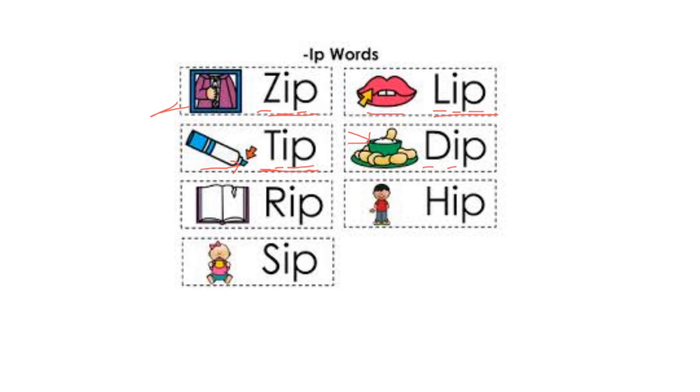And this: D-I-P, dip. What's happening to the paper here? R-I-P, rip. And what part of the body is this? H-I-P, hip. And the last one, what's the baby doing? S-I-P, sip.